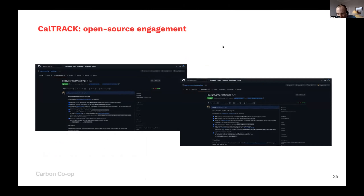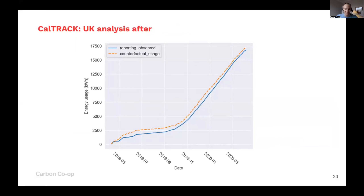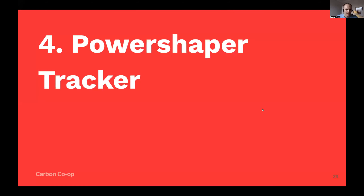Just to answer a question from the chat: is that graph in relation to a single house? Yes, it is. Just to be clear, this is cumulative energy consumption. You can see that the rate of increase in energy consumption tends to decrease over the summer, and then as you come into the winter months the rate steeply increases. But the key point is that reported consumption is typically lower than the counterfactual.